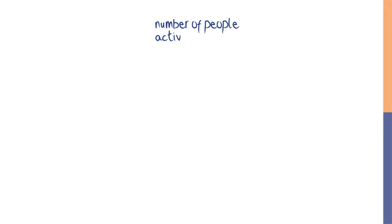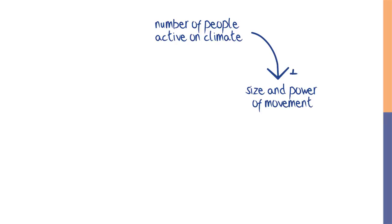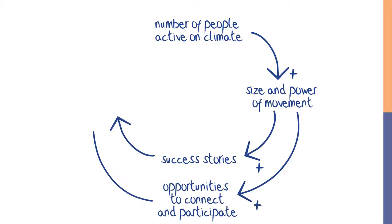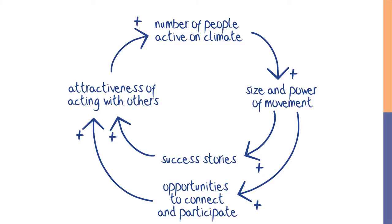The final type of reinforcing feedback process we're going to talk about that can help protect the Earth's climate is movement building. As the number of people active in a climate movement grows, the size and power of the movement grows. There are more successes and more ways for people to connect and participate, making participation even more attractive. Of course, if you've been involved in a movement, you know it's not always this simple — other forces within systems can arise to push back. But the power of reinforcing feedback is always there for you to tap into, especially if you can make your efforts inviting and inclusive.